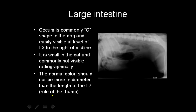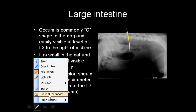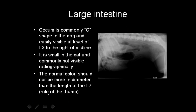The large intestine: the cecum is C-shaped and usually seen at the level of about L3. It is small in cats and commonly not visible radiographically. The normal descending colon diameter should not exceed the length of L7. If in doubt, that measurement is a useful rule of thumb.